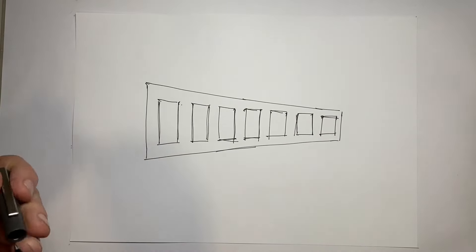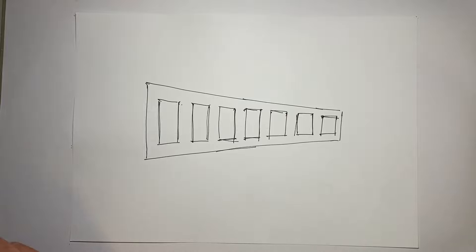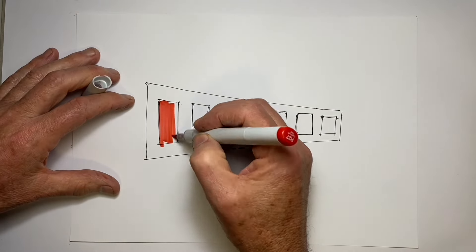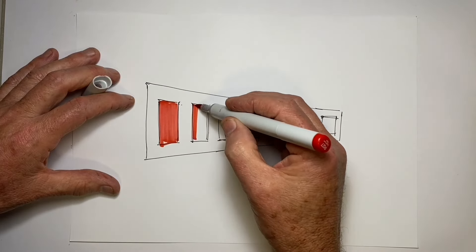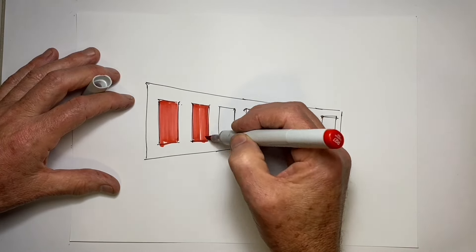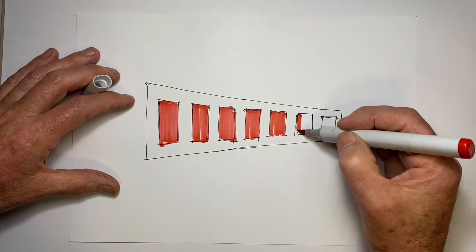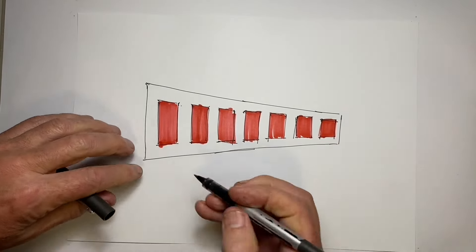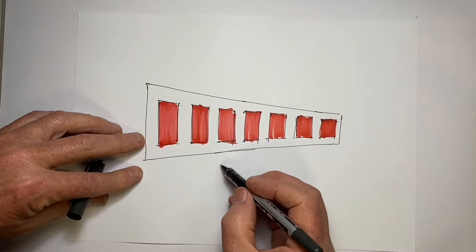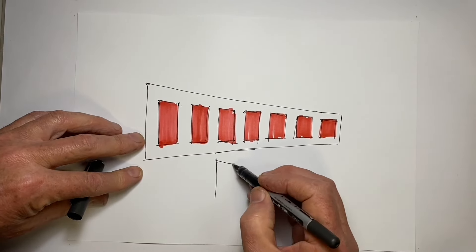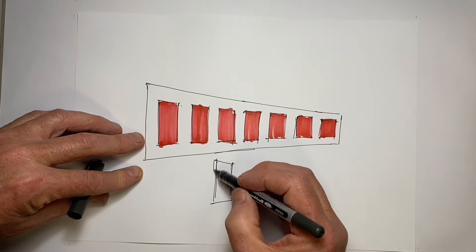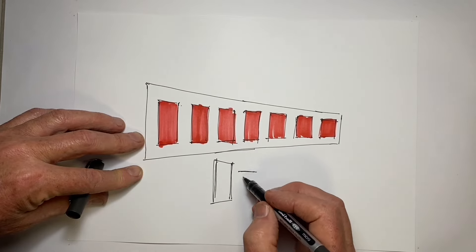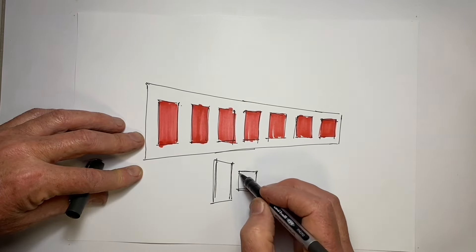One good way of checking to see whether we've got this right is to check the proportions of our windows. That first window is tall and rectangular. If we color it in with a red pen, it becomes more obvious what's happening with the proportions. The first window is nice and rectangular, allowing for the perspective angles at the top and bottom. But when we compare it with that last, seventh window, it's a lot squarer in shape.